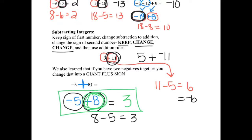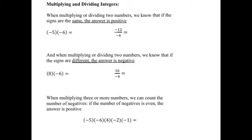That's adding and subtracting. Then we learned about multiplying and dividing two numbers. If the signs are the same, the answer is positive. If the signs are different, the answer is negative. For example, negative 5 times negative 6 — signs are the same, so 5 times 6 is 30, positive. If the signs are different, the answer is negative.